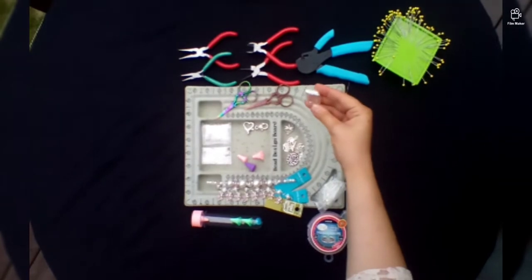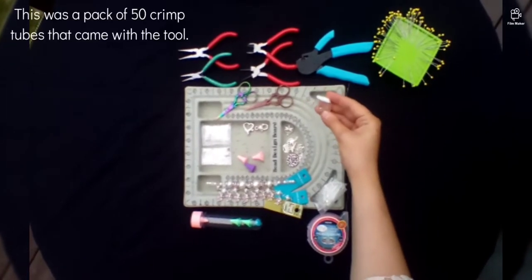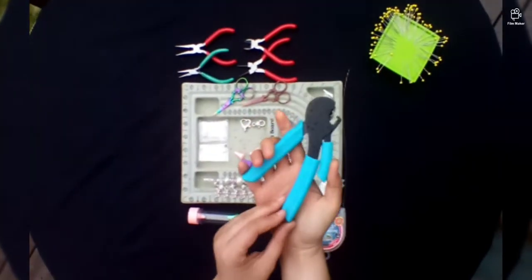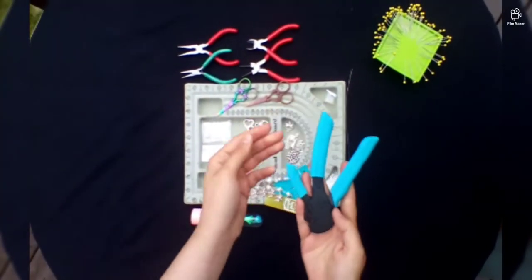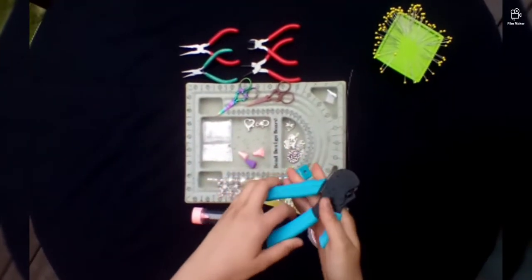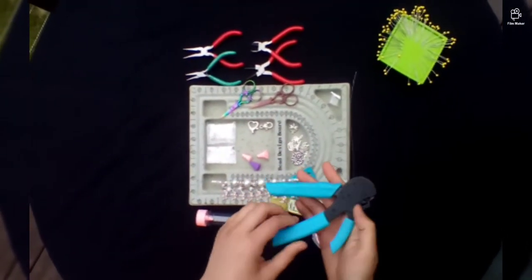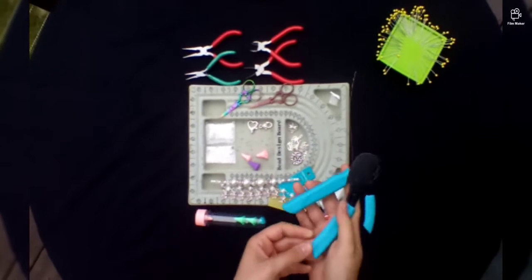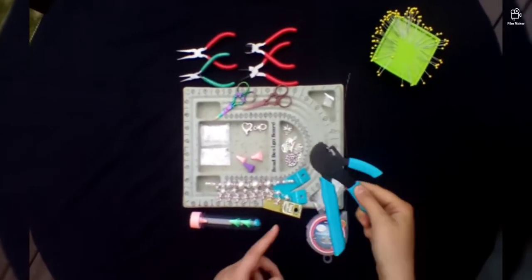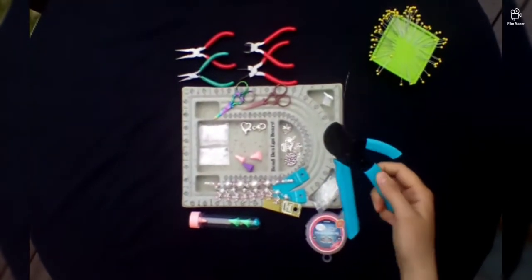You also need two crimp tubes for each scissor fob. Those I will be using with this one-step crimper. There are other ways to set a crimp. I think it's usually a two-step process. This is the only one I know how to use and I got this at Joann's. I will link it below.